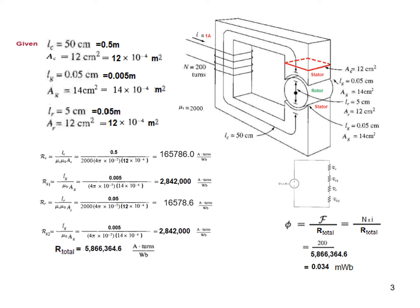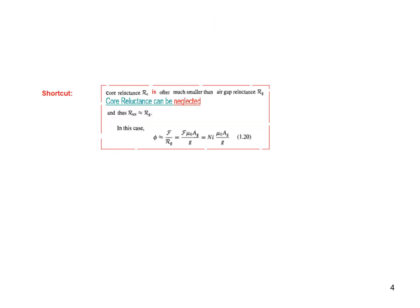There is a shortcut also. In the previous video we explained that since the reluctances of the air gap are much higher than those of the stator or the rotor, it is 2.8 million, much higher than the stator reluctance and rotor reluctance. Therefore we can neglect these smaller quantities.